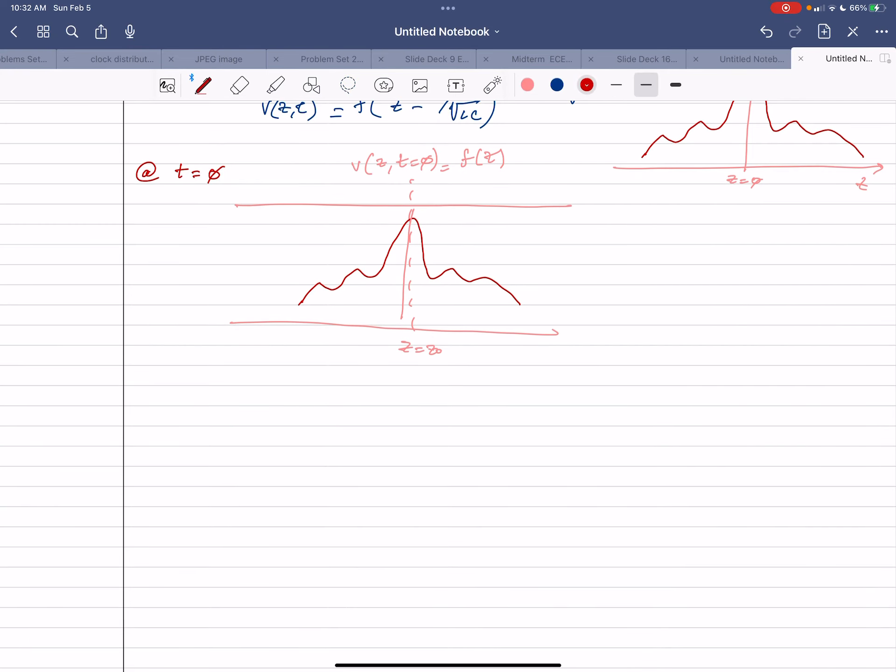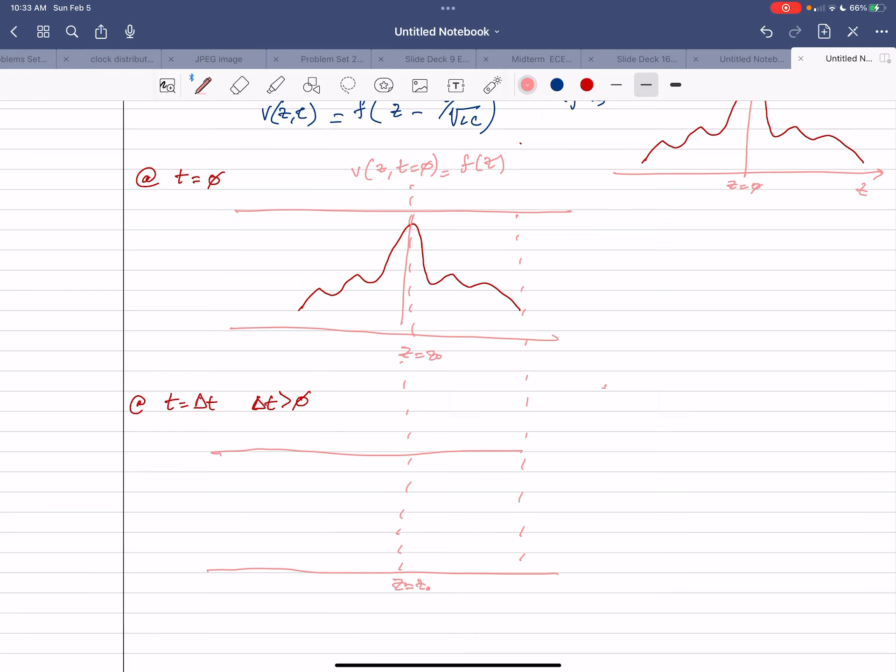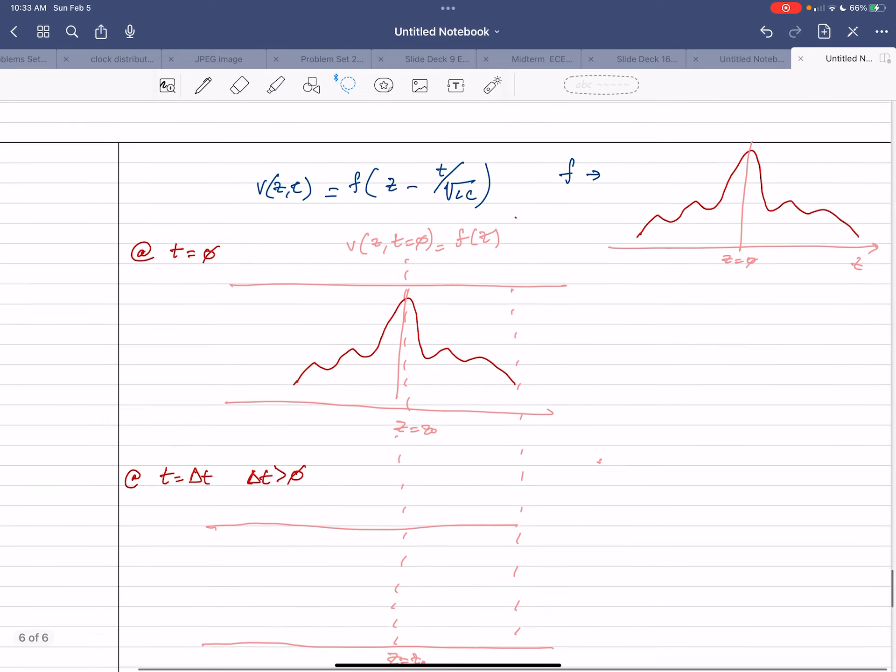Now, when time changes at t is equal to delta t, so an increment of time later, and let's say that delta t is bigger than zero, then v at, so I'm going to draw this thing again.